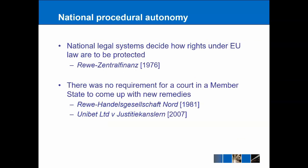This gives us the core principle of national procedural autonomy, which tells us that national legal systems get to decide how rights under EU law are to be protected. The central case for this is Reva Zentralfinance from 1976. Furthermore, there's no requirement for a court in a member state to come up with new remedies — we originally saw this in Reva Handelskazelschaft Nord in 1981, and it remains important today as seen in the Univet case in 2007. We can also think of an example where there is a prescribed remedy if we consider the Frankovich case. While that central principle of national procedural autonomy is to some extent still with us, over the years it has been worn away by a number of other principles.